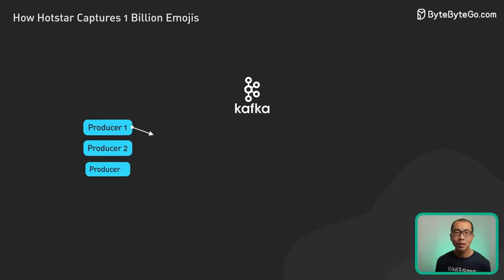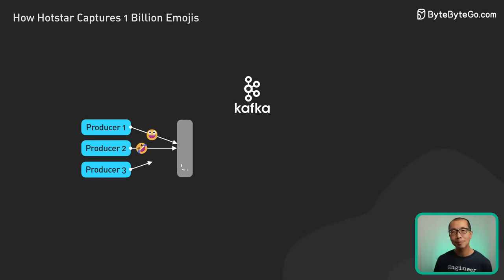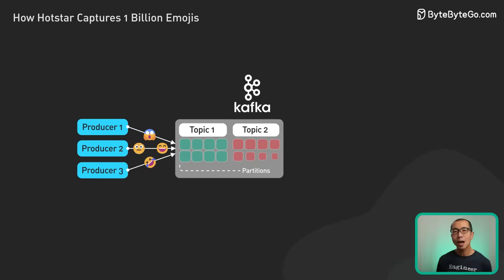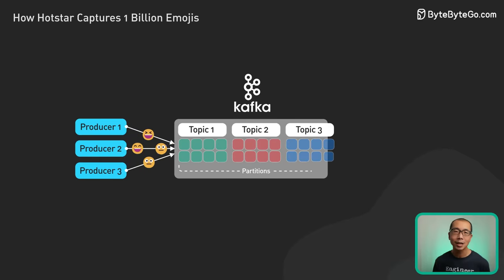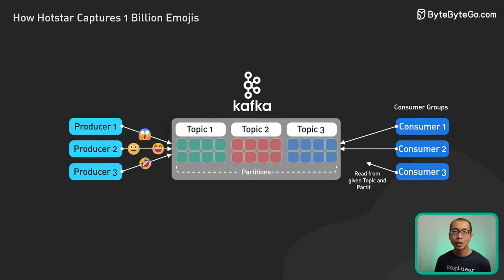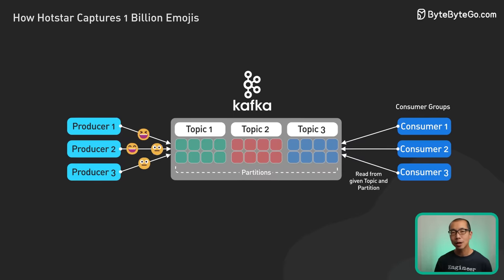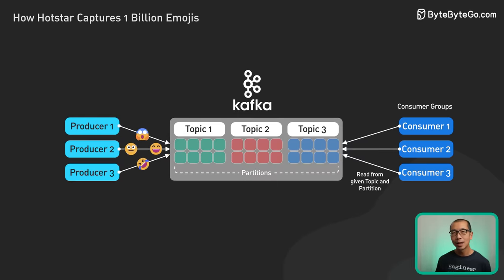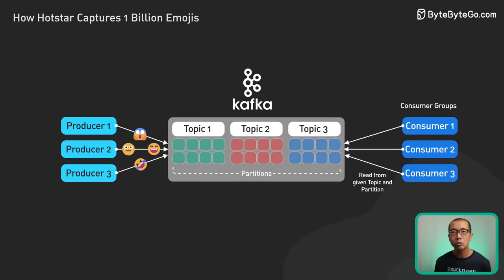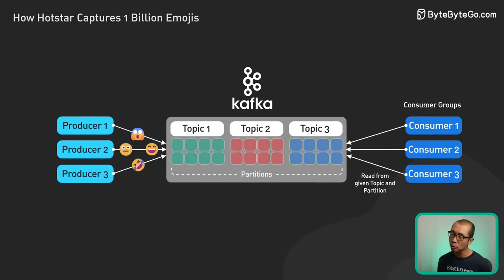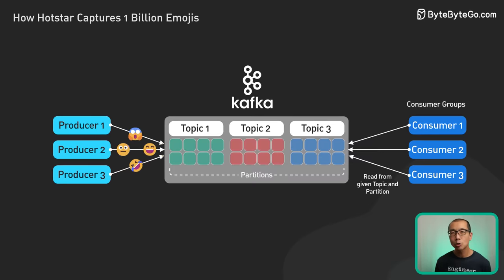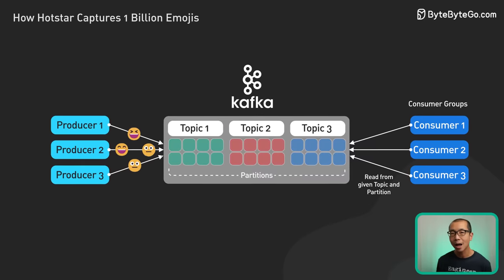Kafka uses topics to organize data streams and consumer groups to enable parallel processing. This capacity to buffer huge streams of data from multiple sources makes it an ideal choice to handle the high volumes of emojis.